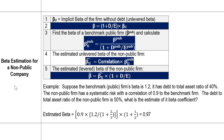The next question is: we know how to estimate the beta coefficient for a public company, but what about a non-public firm? How do we estimate that? To do so, we need to understand the leverage impact on beta, and we are going to use the benchmark approach.